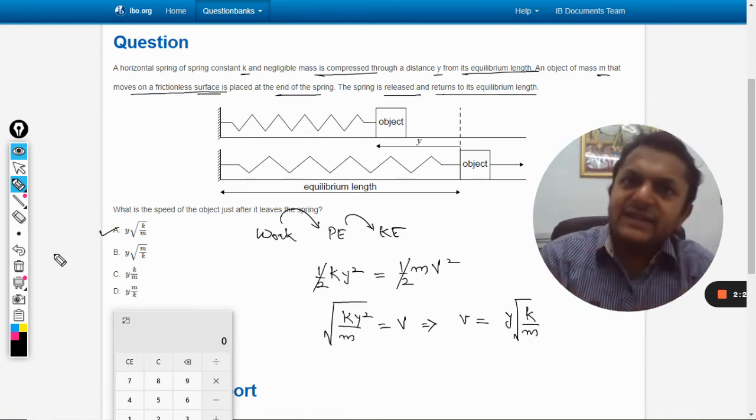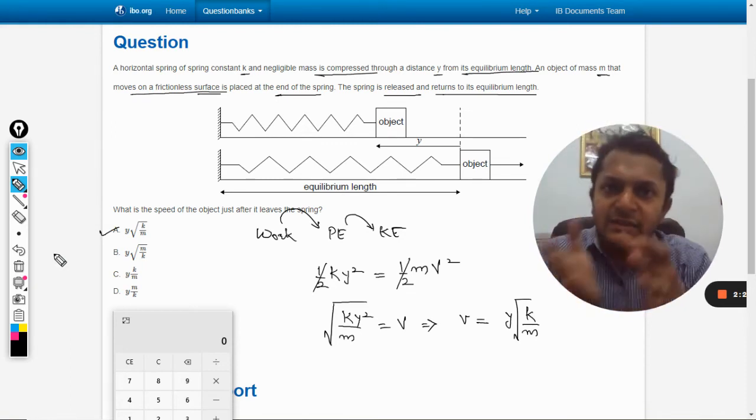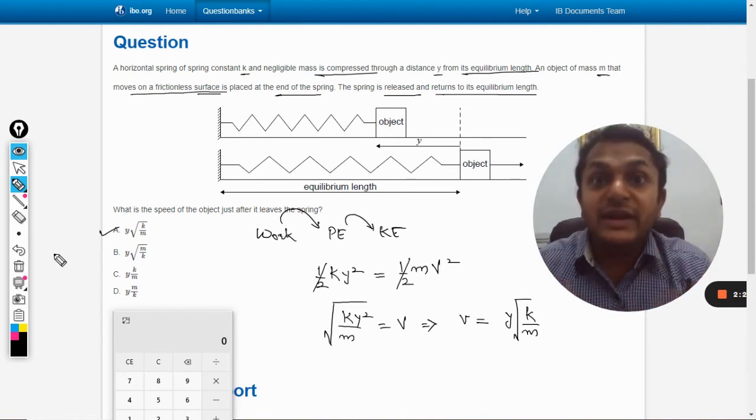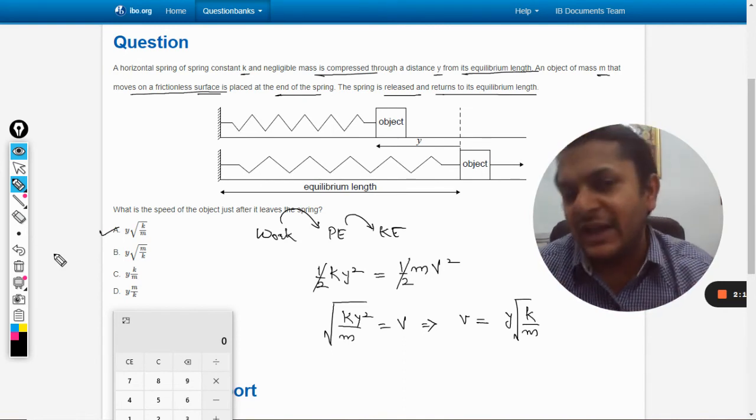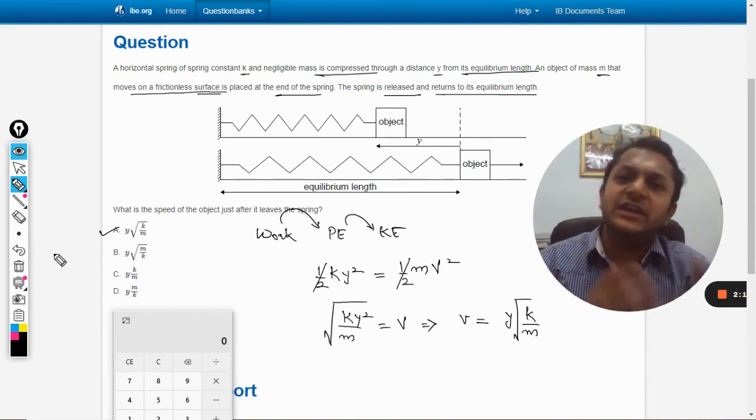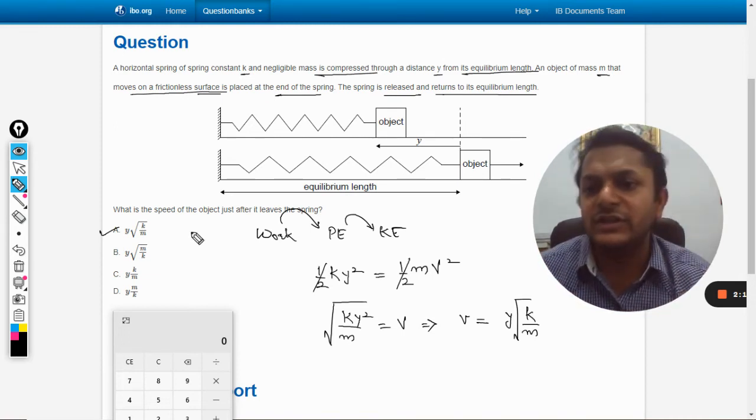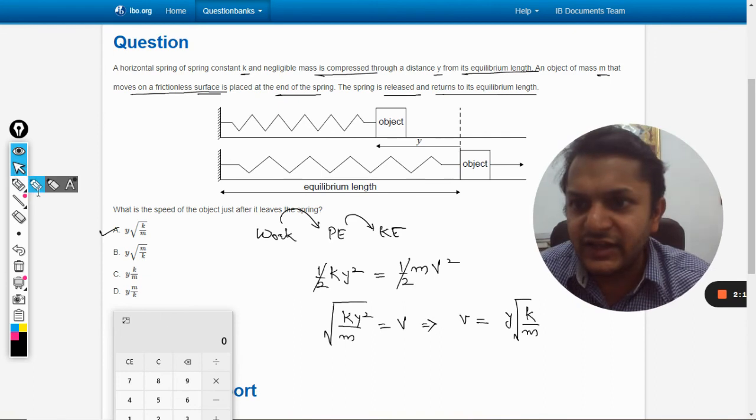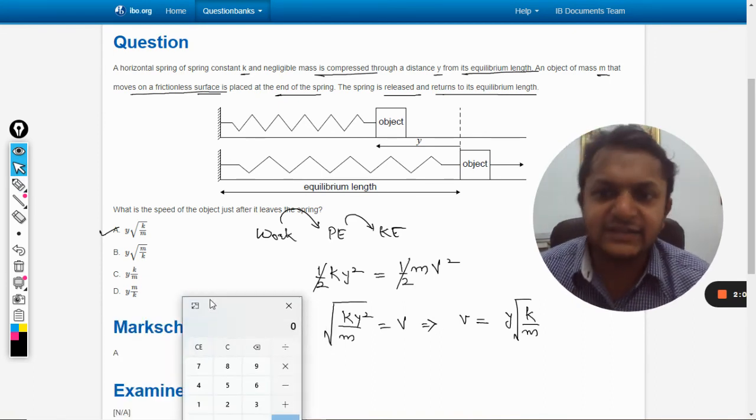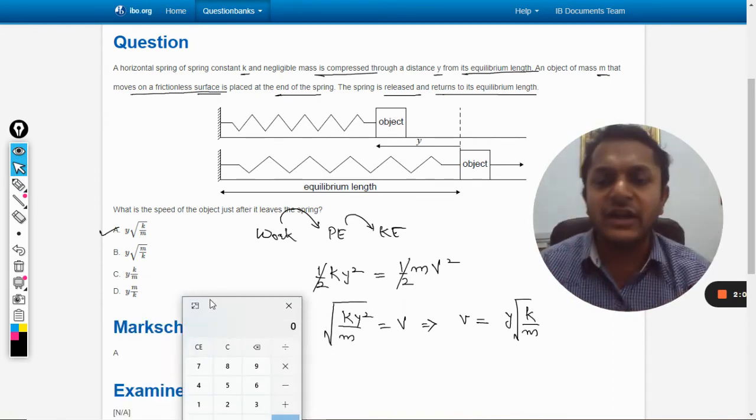It's a very simple concept. At the extreme position, the complete energy is potential, and at the mean position, the complete energy is in the form of kinetic energy. Both of the energies are equal to each other. Energy cannot be created nor destroyed. That is why we are doing this. Let us verify the answer once. Yes, the answer is a. We are absolutely correct with this.